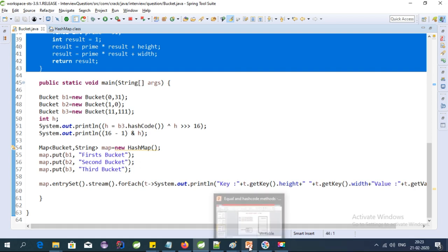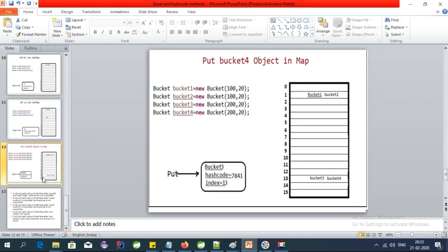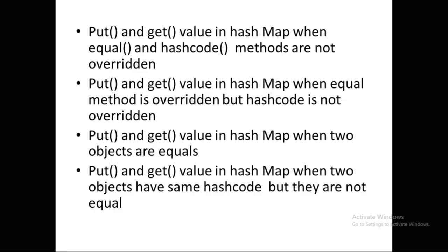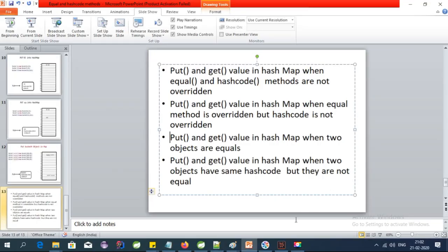That covers the internal implementation of HashMap. In my next video I will discuss: put and get value in HashMap when equals and hashCode are not overridden; when only equals is overridden but hashCode is not; when two objects are equal; and finally when two objects have the same hash code but are not equal. See you in the next video!